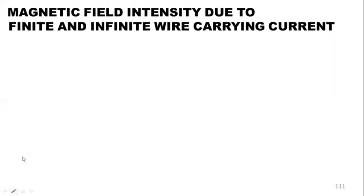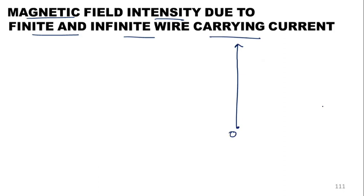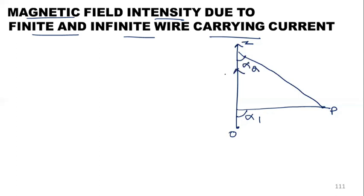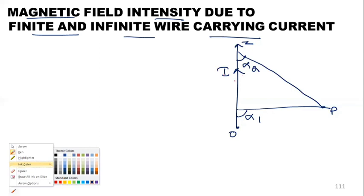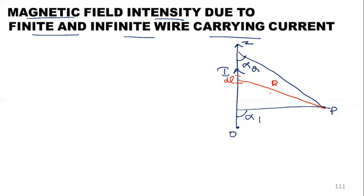We are finding the magnetic field intensity due to a finite and infinite current-carrying wire. This has a lot of similarities with the electric field intensity derivation from module two — the figure is almost the same. We have the origin, a point P, and the z-axis. The conductor is along the z-axis carrying current i, with angles alpha 1 and alpha 2 at the ends. We consider a small length dl in the conductor; the distance to point P is r, and this angle is alpha.